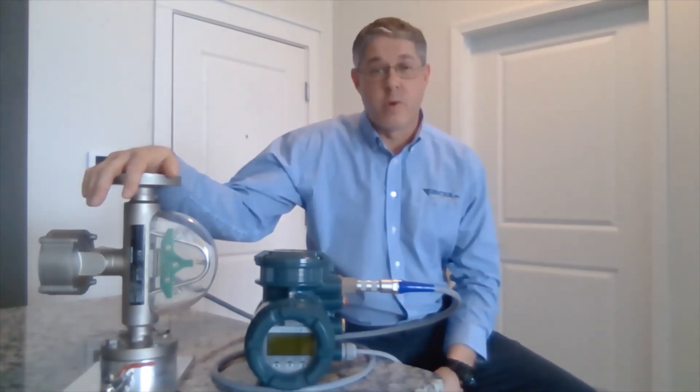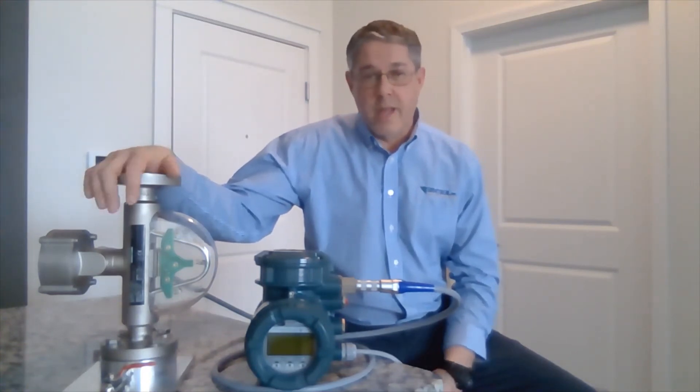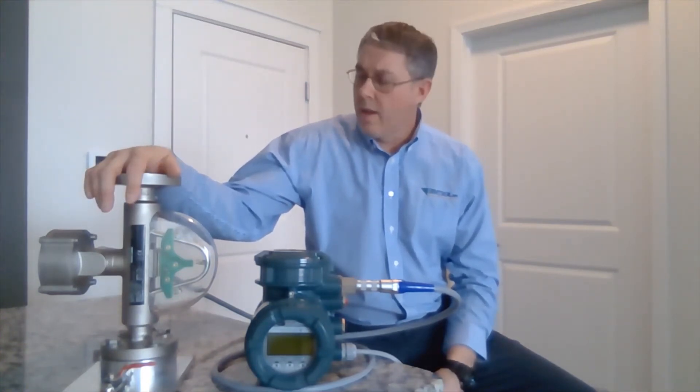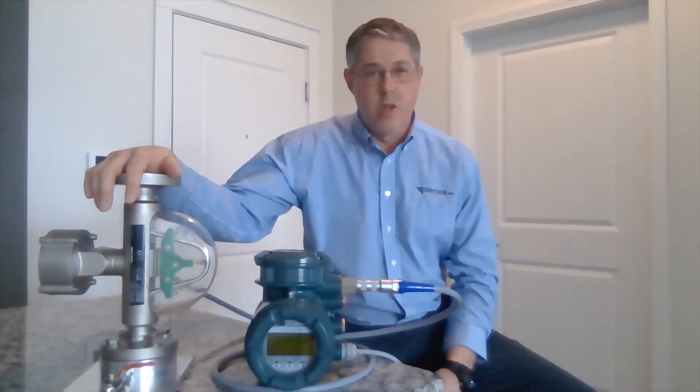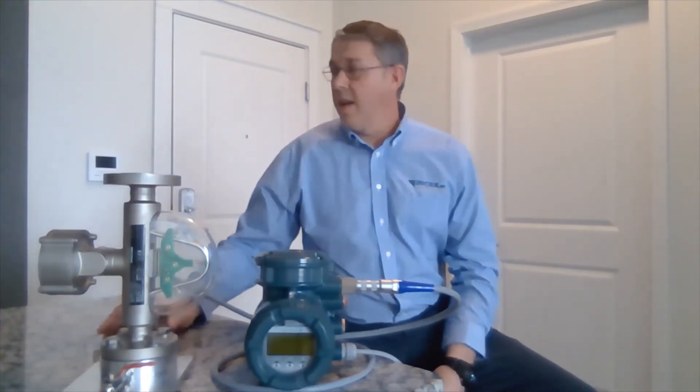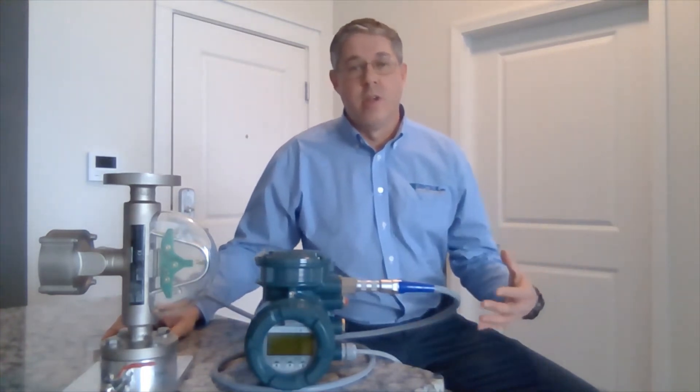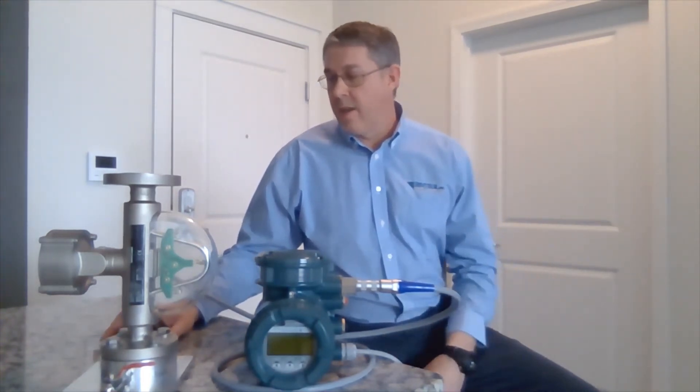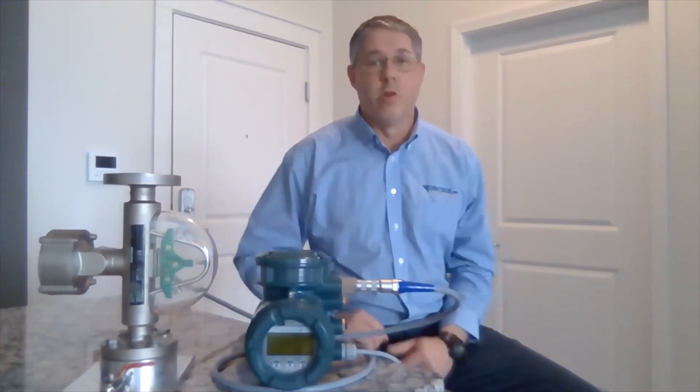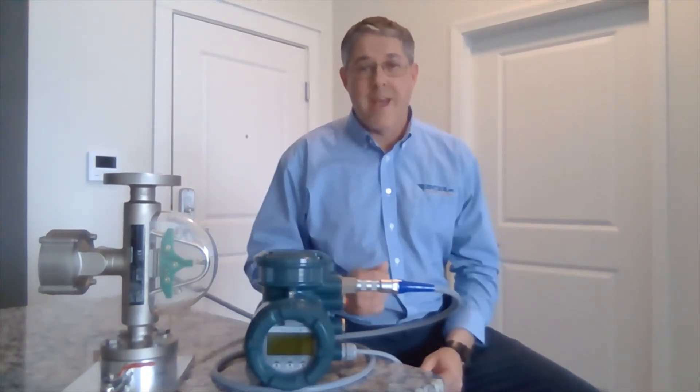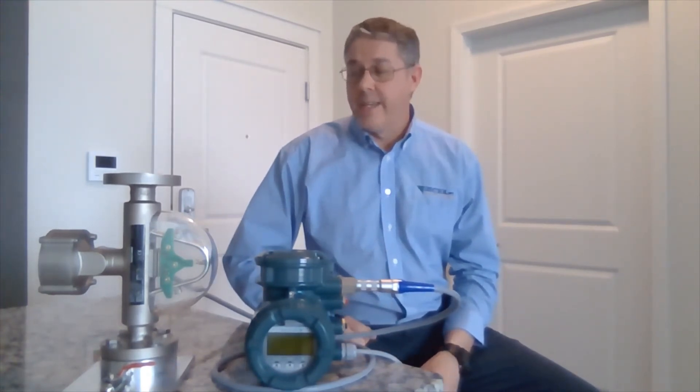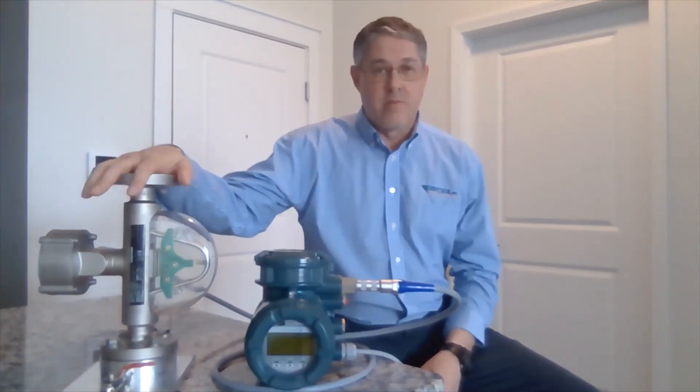You can do bi-directional flow with a Coriolis meter, and Coriolis meters typically can handle a very wide range of pressures and temperatures. The biggest benefit for a Coriolis meter is you're getting a true mass flow, temperature, and density measurement out of one meter.